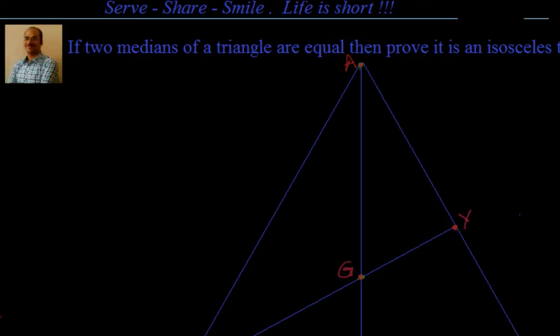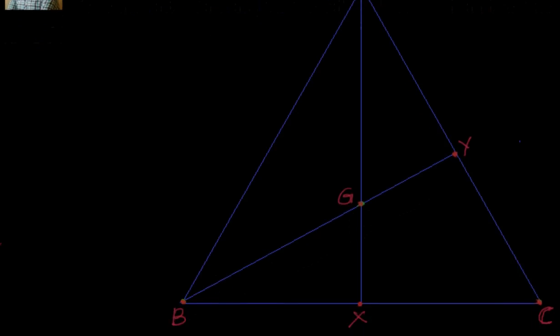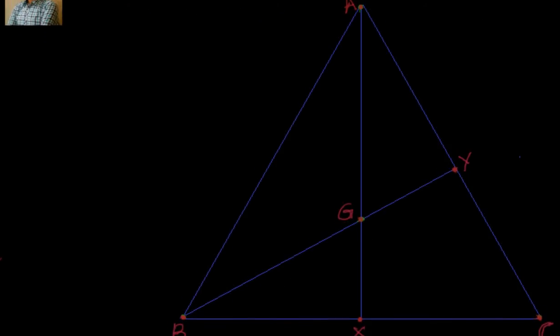So how to do that? For that, we have just taken a diagram, an isosceles triangle. So we have ABC is an isosceles triangle.